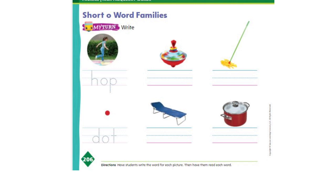Now it's your turn to do some work in your books. If you open your My View K2 books on page number 206, for short o word families, you need to look at the picture and write the word under each picture. The first one is done for you.